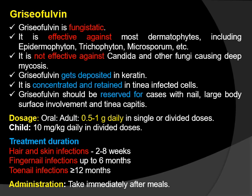Doses of Griseofulvin: oral adult 0.5 to 1 g daily in single or divided doses; child 10 mg per kg daily in divided doses. Treatment duration: hair and skin infections 2 to 8 weeks; fingernail infections up to 6 months; toenail infections more than 12 months. Administration: take immediately after meals.